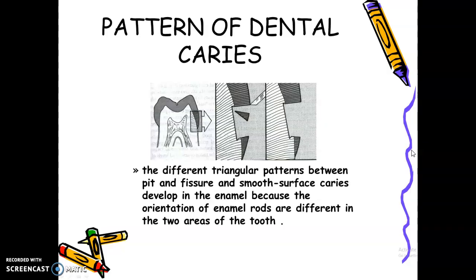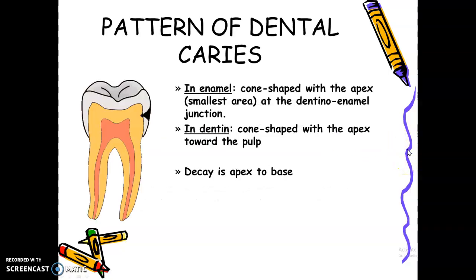We go to smooth surface caries. The different triangular patterns between pit and fissure and smooth surface caries develop in the enamel because the orientation of enamel rods are different in the two areas of the tooth — the pit and fissure area and the smooth surface area. In smooth surface caries, in the enamel, it's wider on the outside and gets smaller towards the DEJ.